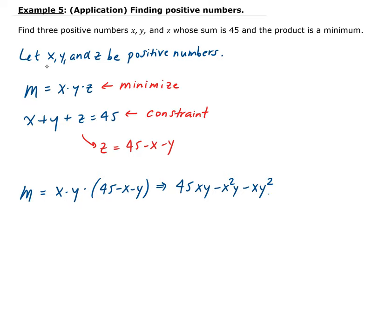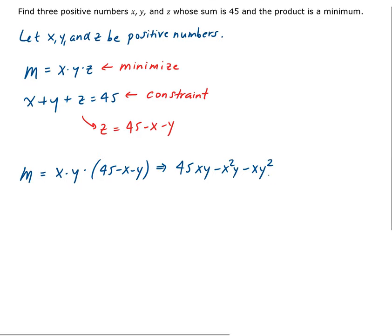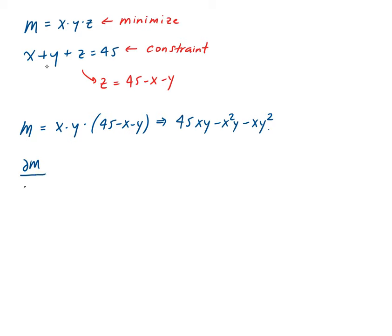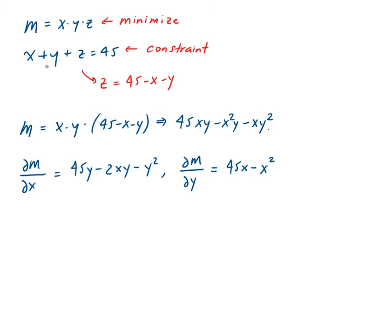To minimize this, we need to take the partial derivatives of M with respect to x and y. The partial of M with respect to x — treating x as the variable and y as a constant — gives us 45y minus 2xy minus y². The partial of M with respect to y — treating x as the constant — gives us 45x minus x² minus 2xy.